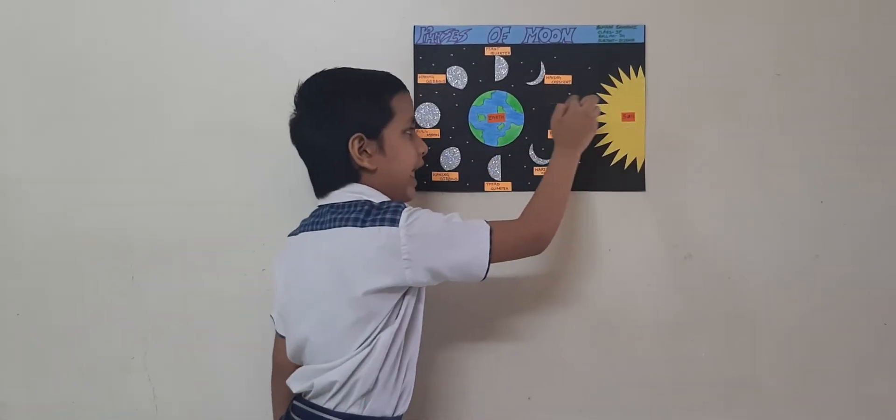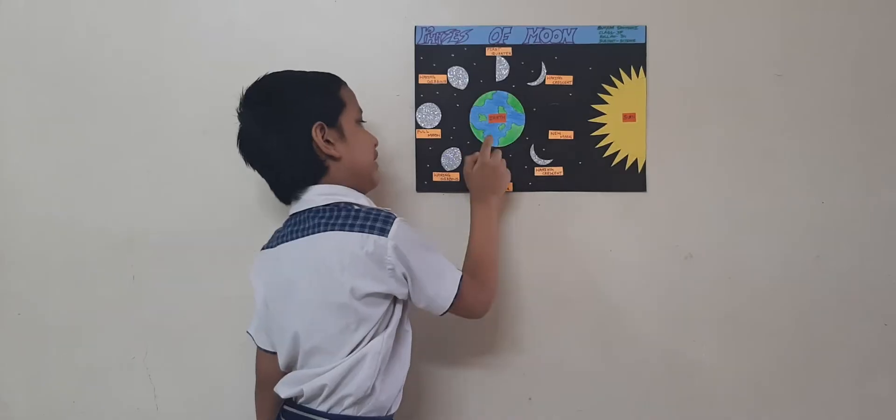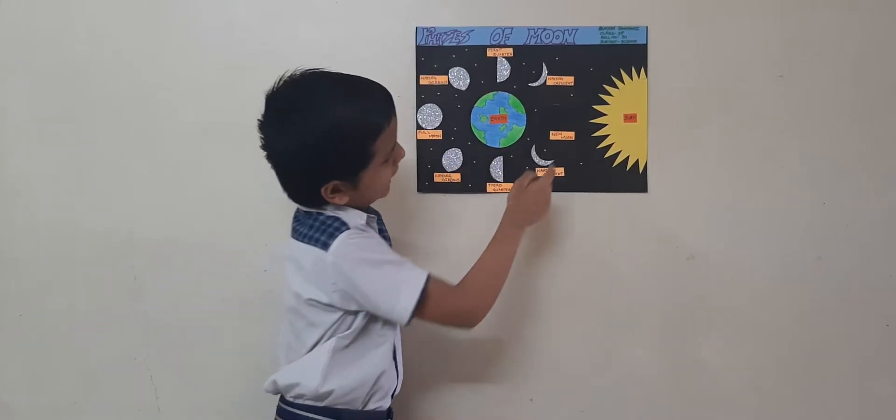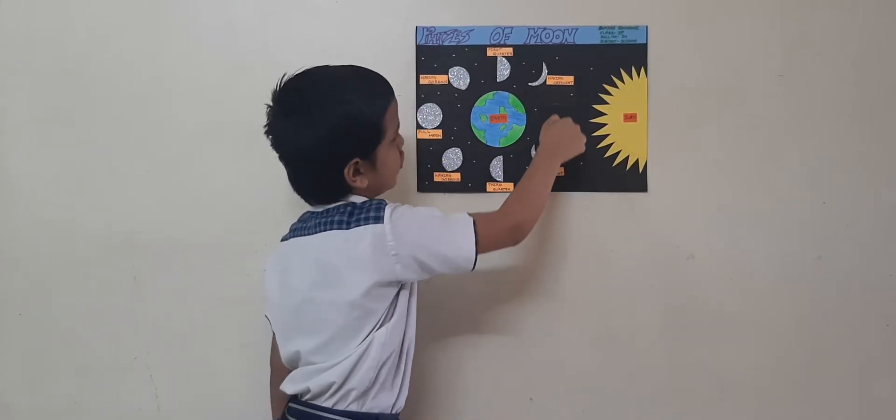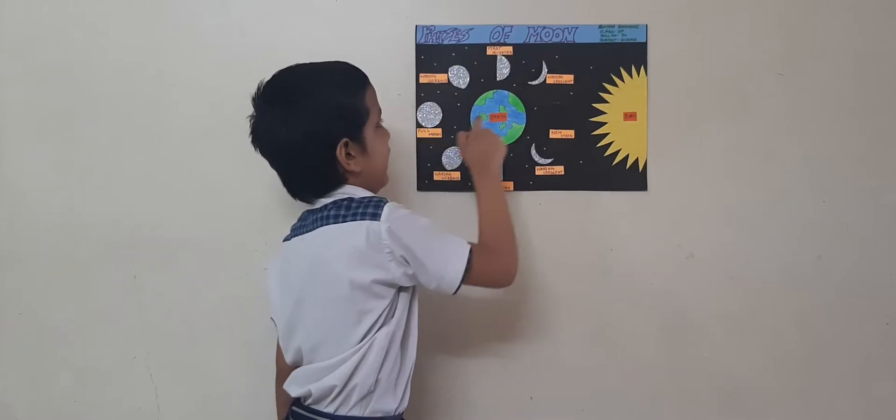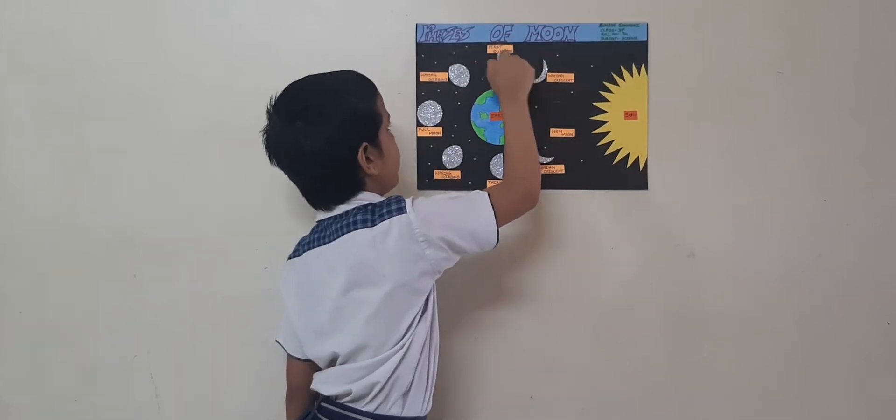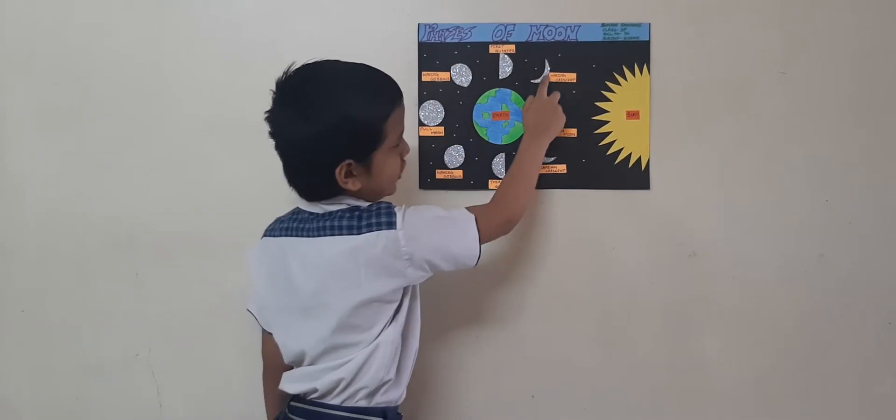When the sun and moon are aligned on the same side of the Earth, we can see a new moon. As the new moon begins its orbit, we see more and more of the moon's face. This is called waxing.